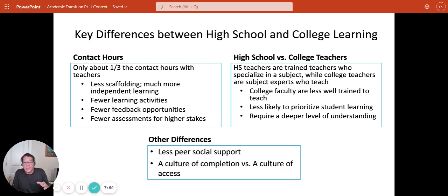And then there are other differences. There's less peer social support. So in high school, oftentimes you're with the same students in all your classes. You may have had the same students since you were a child in the same school. In college, you have different students in different classes. You may not know anyone in any of your classes. You have to get to know them.